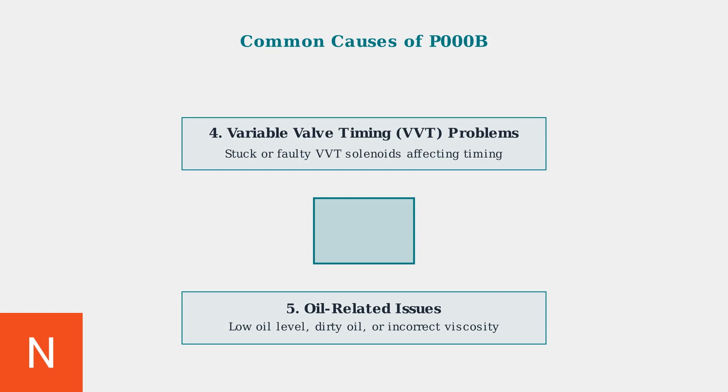Finally, oil-related issues can cause P000B. Low oil levels, dirty oil, or incorrect oil viscosity can affect VVT system operation, leading to timing problems and sensor response issues. These five common causes account for the majority of P000B codes. Proper diagnosis involves systematically checking each of these potential issues to identify the root cause.